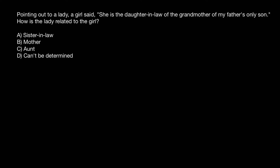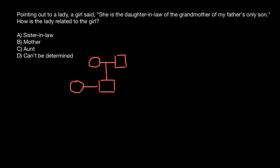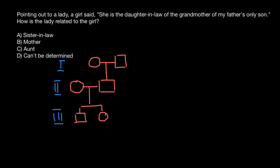How is the lady related to the girl? Let's draw a pedigree of this family according to this description. We have three generations here. Generation number one is a couple at the top, and they have a son. That son is married, and this couple has two children — a girl and a boy. Generation one is the oldest, generation two is in the middle, and generation three is the youngest.